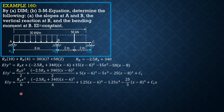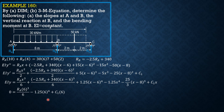For the boundary conditions: when X is 6, Y is 0. So 0 equals RA times 6 cubed over 6, minus 1.25 times 6 to the 4th, plus C sub 1 times 6. Other terms are either zero or the quantity inside is negative, so not included. Simplifying: 36 RA plus 6 C sub 1 equals 1620. Call that equation 1.